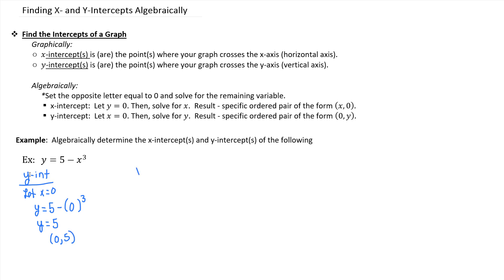Moving on to the x-intercept, we'll let the opposite letter be 0. So in that case, let y be 0. And again, we'll rewrite our equation, but instead of y, we'll put in 0. And then write the rest of our equation, 5 minus x cubed.